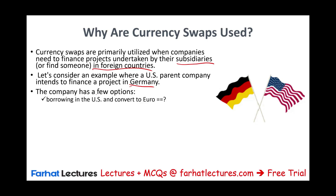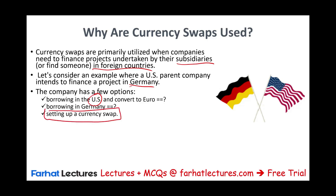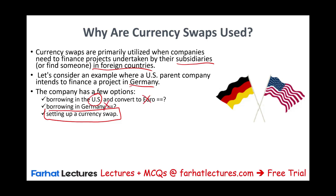You can go to the US bank, borrow US dollars, and convert to euros — but the problem is you have foreign currency risk. Or you can go to Germany and borrow money there — same issue, foreign currency risk. Also, the German company may not know who you are, they may not be familiar with your financial statements or credit risk, and they may charge you a higher rate. Or you can set up a currency swap, which would remove this foreign currency risk.